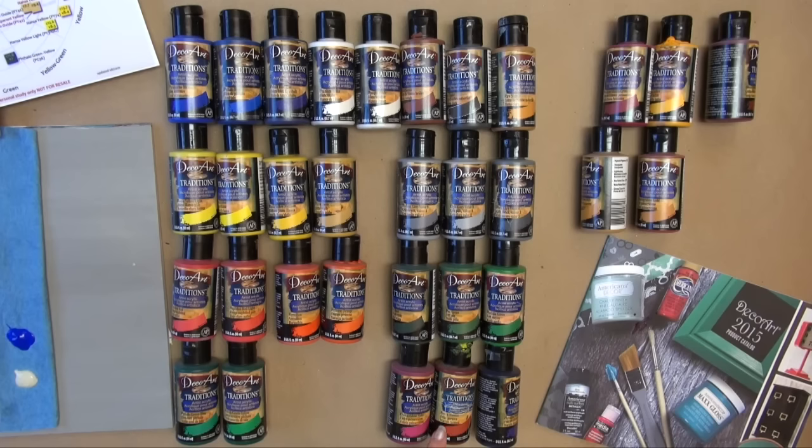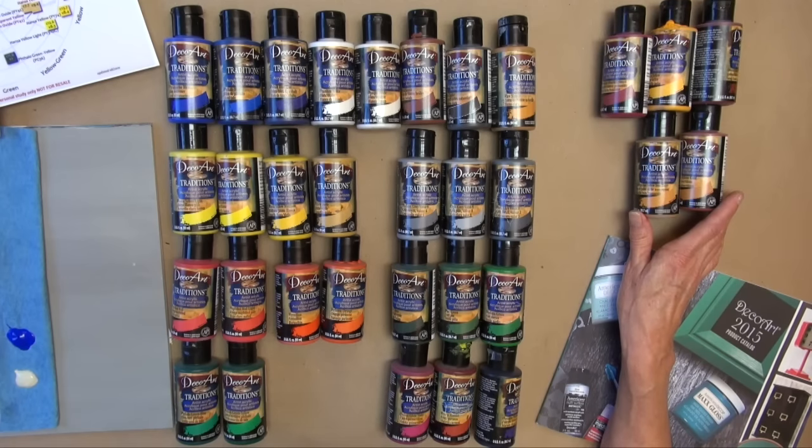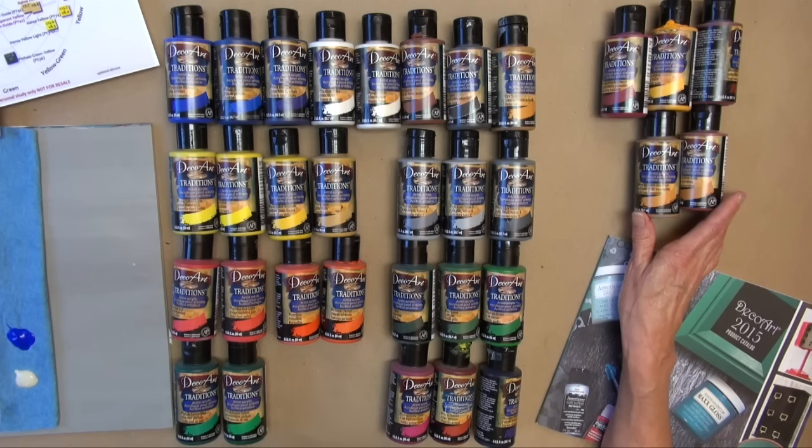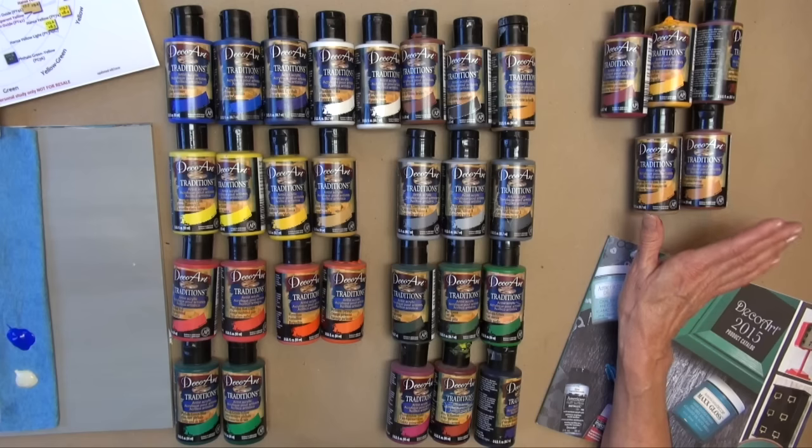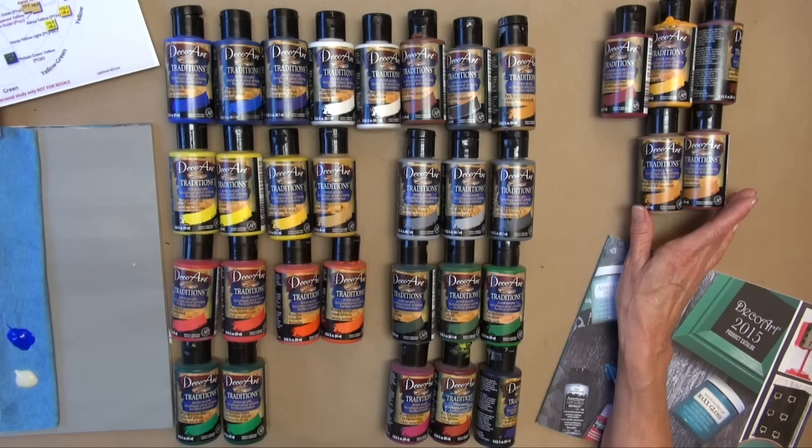We've got some favorites like quinacridone gold, brown matter, dioxazine purple. We also have some transparent pigments which are excellent for enhancing the color, the intensity, and bringing things to life. If you just need a little bit more on top of an area that you've painted, I would definitely go for these transparent pigments that you can glaze with.